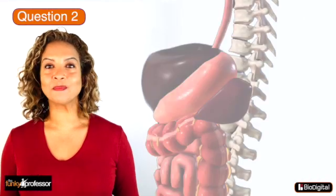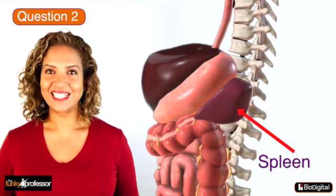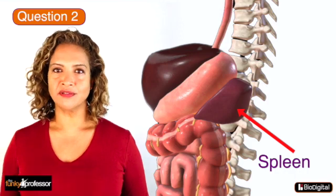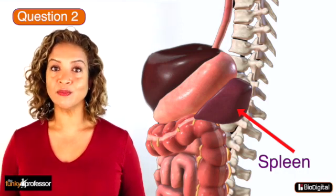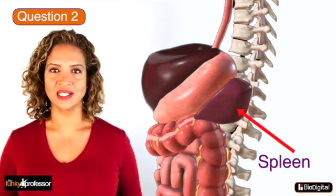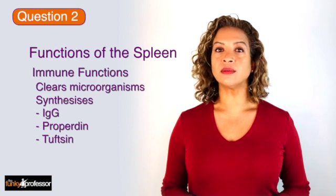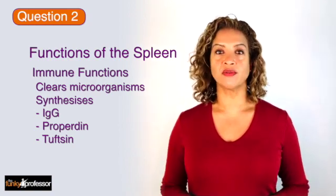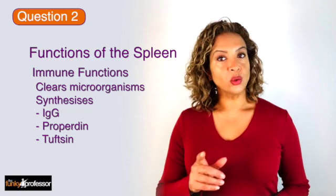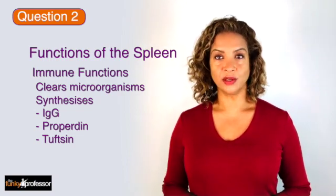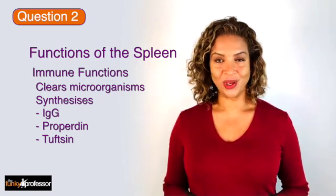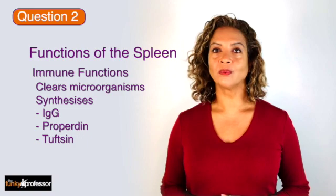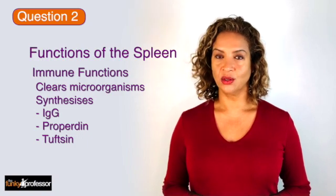Question 2 is the spleen. The spleen acts as a filter for blood and it has a number of important functions. It is involved in the immune system as it clears microorganisms from the bloodstream. It also synthesizes immunoglobulin G, IgG for short, properdin and Tuftsin, all of which are proteins involved in the immune response.